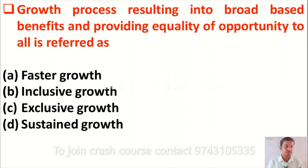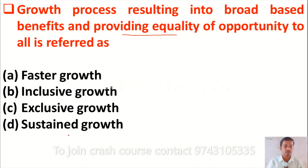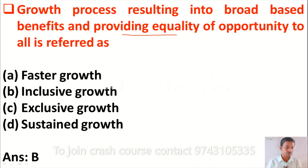The first question is: growth process resulting in broad-based benefits and providing equality of opportunity to all is referred to as — option A: faster growth, option B: inclusive growth, option C: exclusive growth, option D: sustainable growth. The correct answer is option B, inclusive growth.